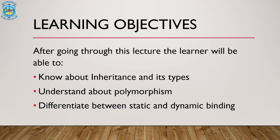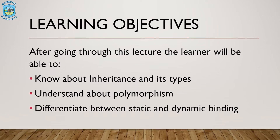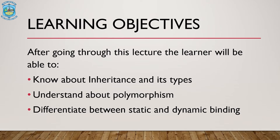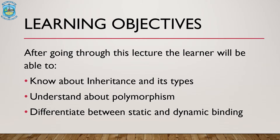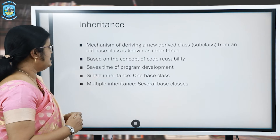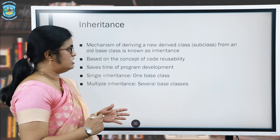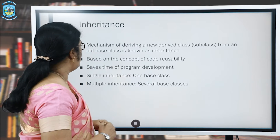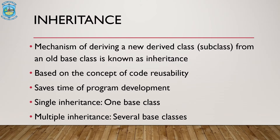After going through this lecture, you will be able to know about inheritance and its various types. You would understand the concept of polymorphism, and you would be able to differentiate between static and dynamic binding. So let us start with the concept of inheritance. The mechanism of deriving a new derived class, which is also known as a subclass, from an old base class is known as inheritance.